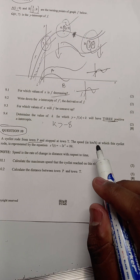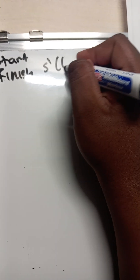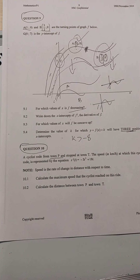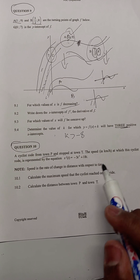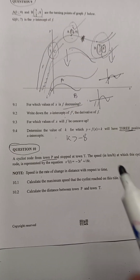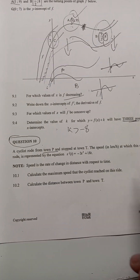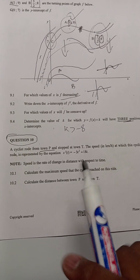The speed in kilometers at which the cyclist rode is represented by this equation: s'(t) = -3t² + 18t. The speed is the rate of change in distance with respect to time, so basically as the speed increases the distance also increases. This involves derivatives.